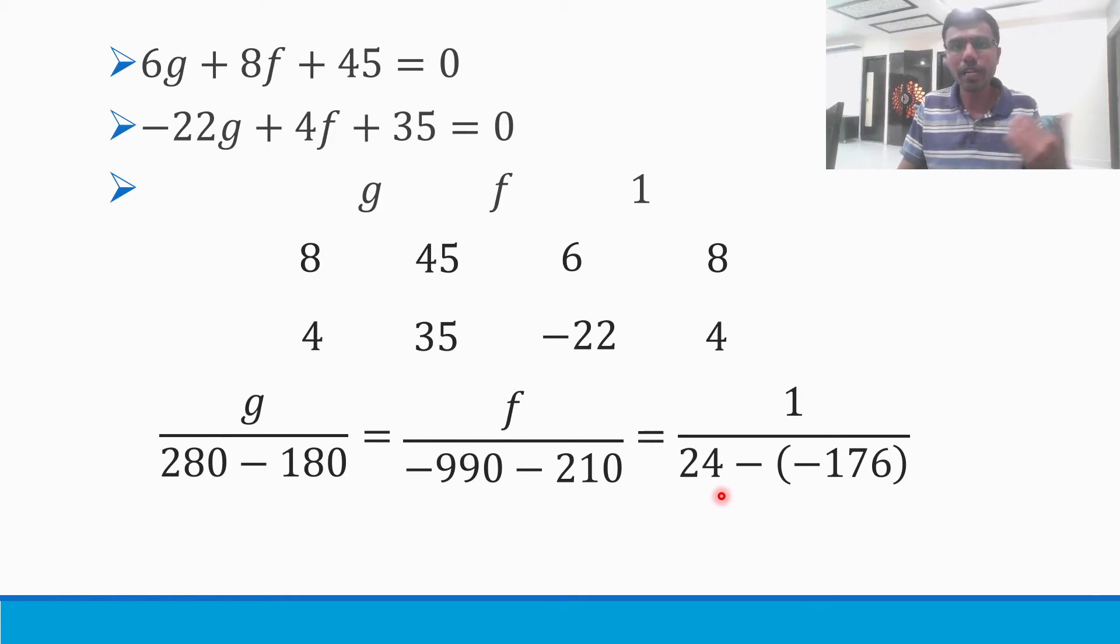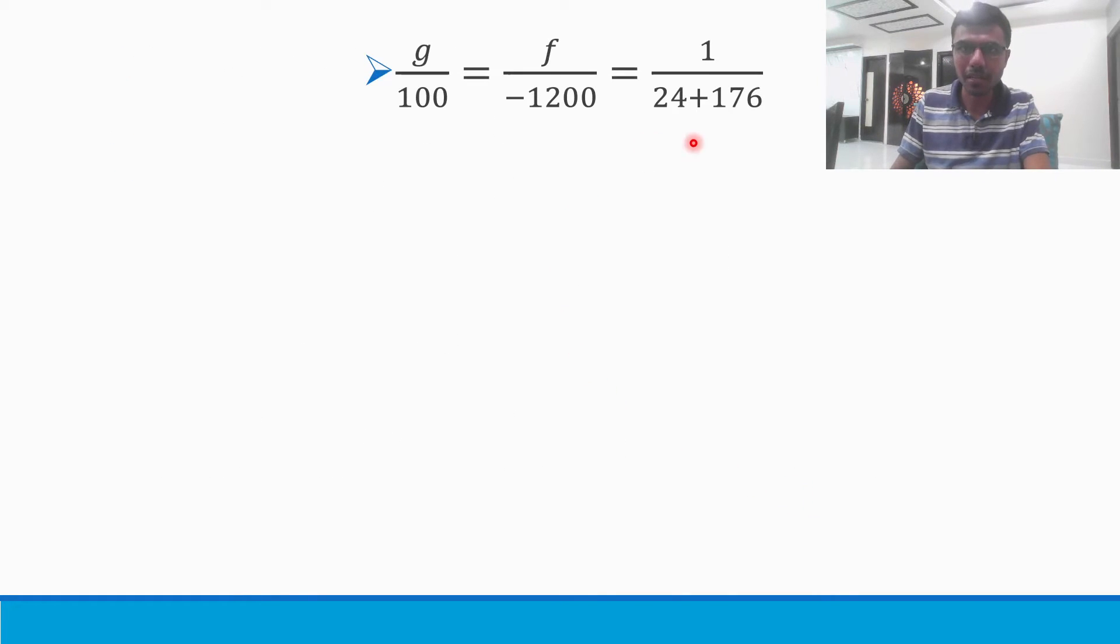Now next, this would be nothing but 24 + 176, because minus of minus would be plus. So 1/(24 + 176). As I mentioned, this is nothing but 200, so 1/200.